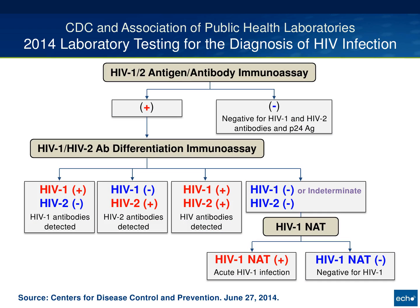The upshot of these recommendations was to initiate HIV testing with an HIV 1-2 fourth generation antigen antibody immunoassay. This was really a departure from our older third generation and rapid tests that were predominantly used, which were second and third generation immunoassays.